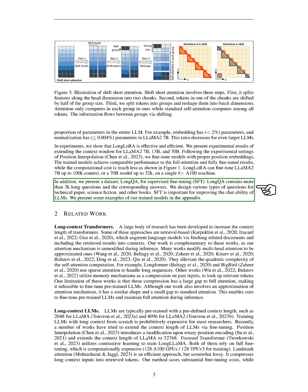There has been a lot of research aimed at increasing the context length of transformers. Some methods are retrieval-based, which enhance language models by fetching related documents and incorporating the retrieved results into contexts. Our work complements these methods, as our mechanism remains unchanged during inference. Other works modify multi-head attention to approximate ones, alleviating quadratic complexity. However, these methods often have a large gap to full attention, making it difficult to fine-tune pre-trained LLMs. Our method, on the other hand, has a similar shape and a small gap to standard attention, enabling us to fine-tune pre-trained LLMs and maintain full attention during inference.